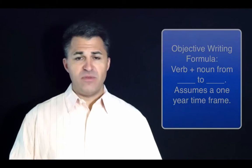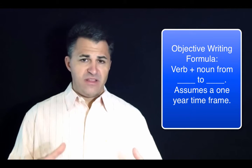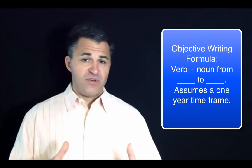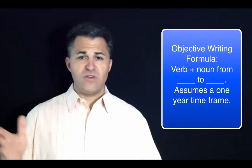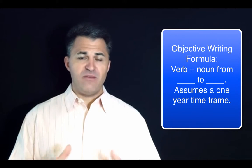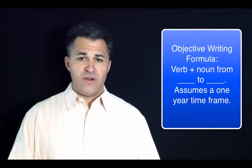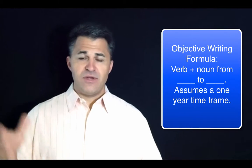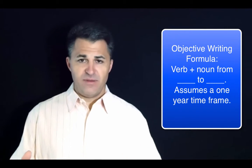The formula goes like this: you have your verb, which is your action; you have a noun, which could be something like money or revenue; and then you have from when to when, or from what to what. For example, you may have a goal — increase, that's your verb — your revenue from $0 to $100,000. And it's already assumed that's within a year's time frame.